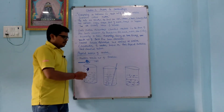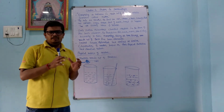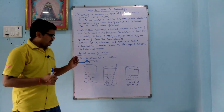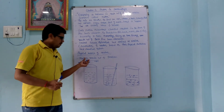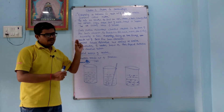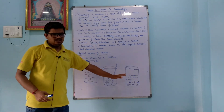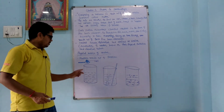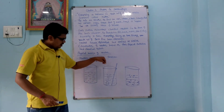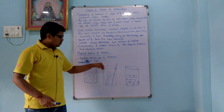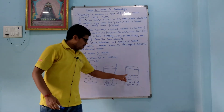Matter is made up of particles. For example, take salt — it is a large quantity, but when we try to dissolve it in water using a glass rod, after some time it converts into small particles and dissolves easily, becoming invisible. This shows that matter consists of tiny particles.